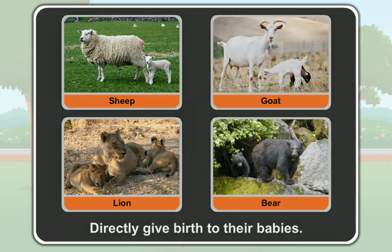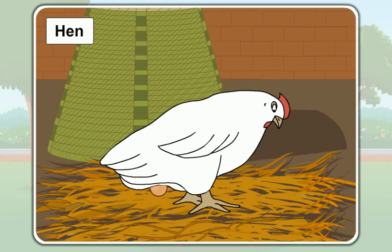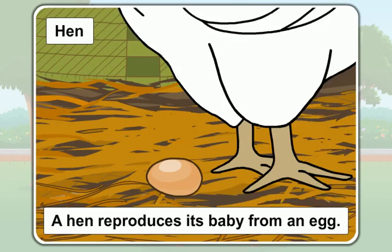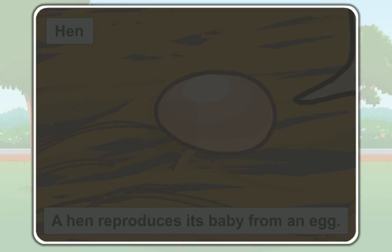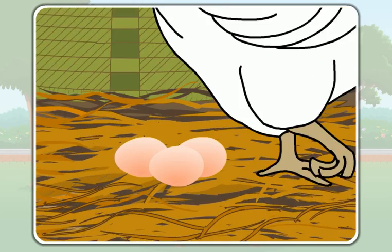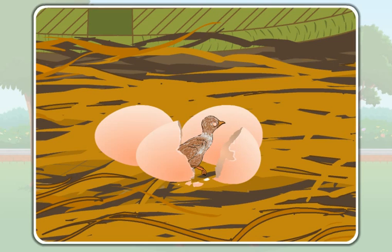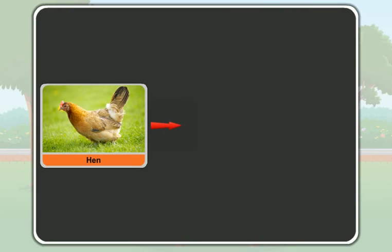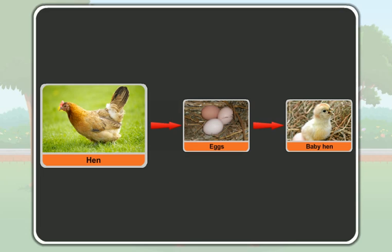Students, this is a hen. Do you know how a hen reproduces its baby? A hen reproduces its baby from an egg. A hen lays eggs, and the baby hen comes out of the egg.